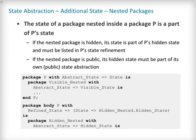Until now, we have only spoken of hidden variables, but variables are not the only constituents of a package's state. If a package P contains a nested package, then the nested package's state is part of P's state. As a consequence, if the nested package is hidden, its state is part of P's hidden state and must be listed in P's state refinement. This is the case in our example shown here, where the package hiddenNested's hidden state is part of P's hidden state. Note that a visible part of hiddenNested would also have been part of P's hidden state. Also note that if P contains a visibleNested package, then the nested package's state is not part of P's hidden state — its hidden state should be declared in a separate state abstraction on its own, like it is done in our example for visible_nested.